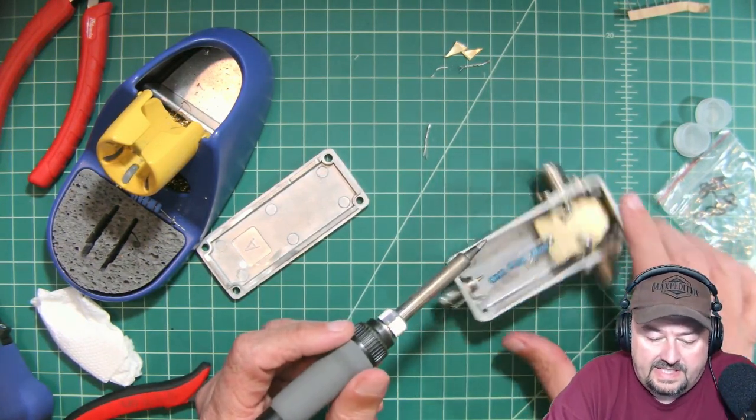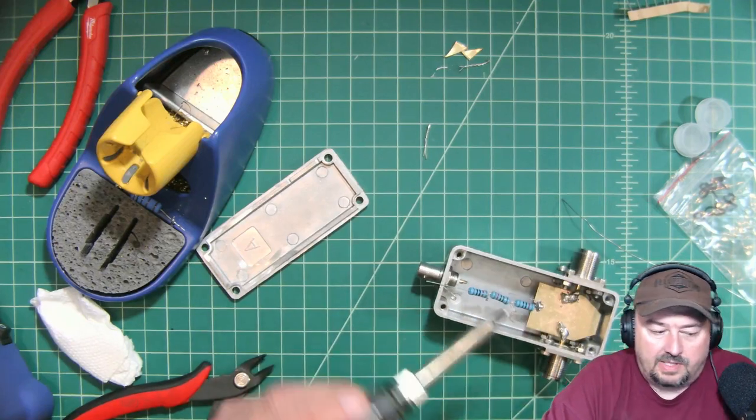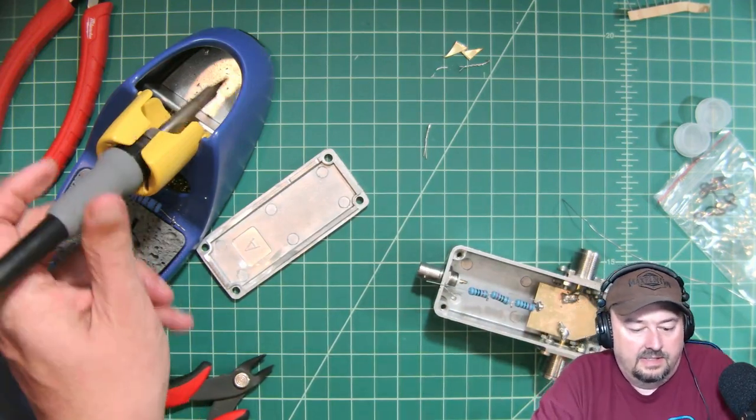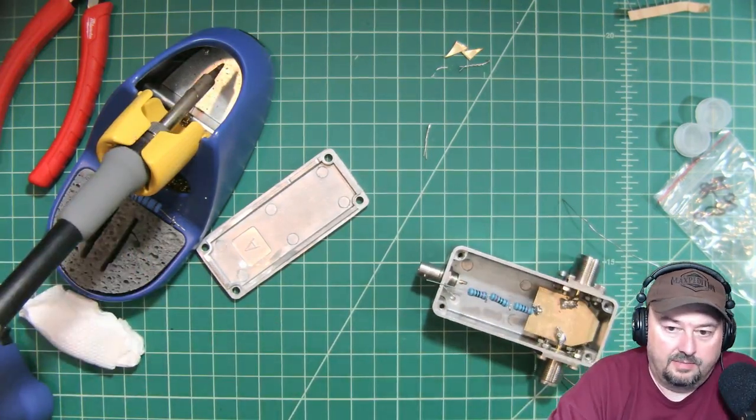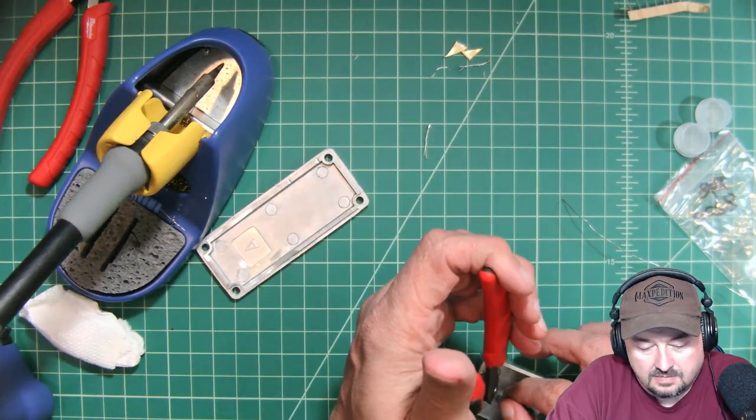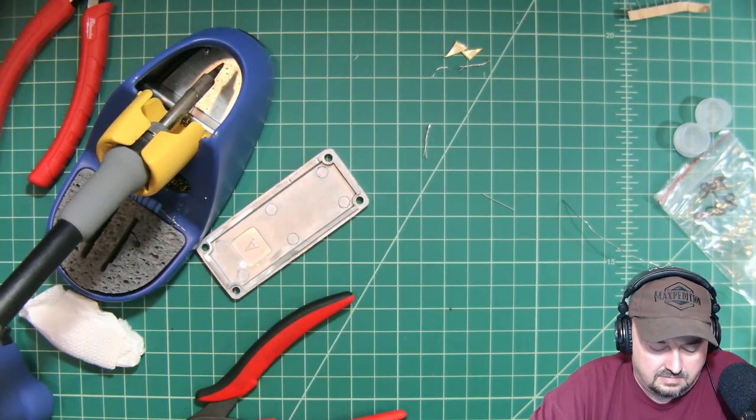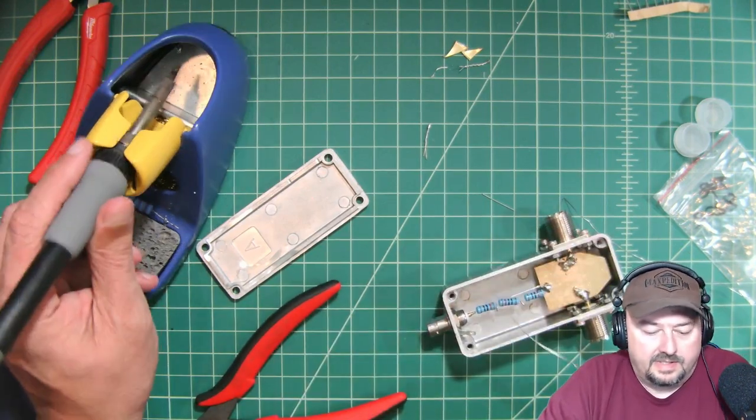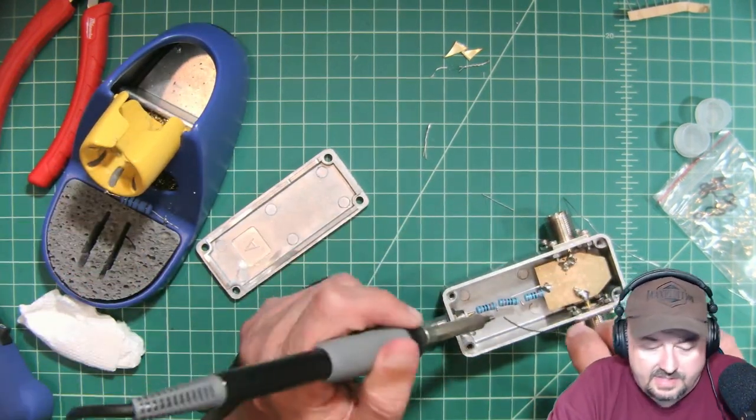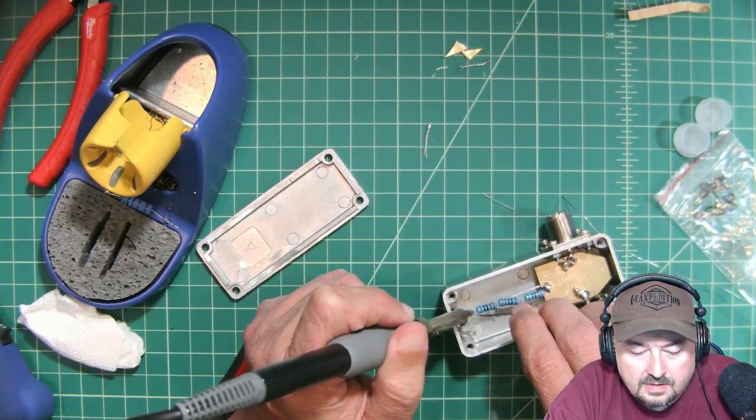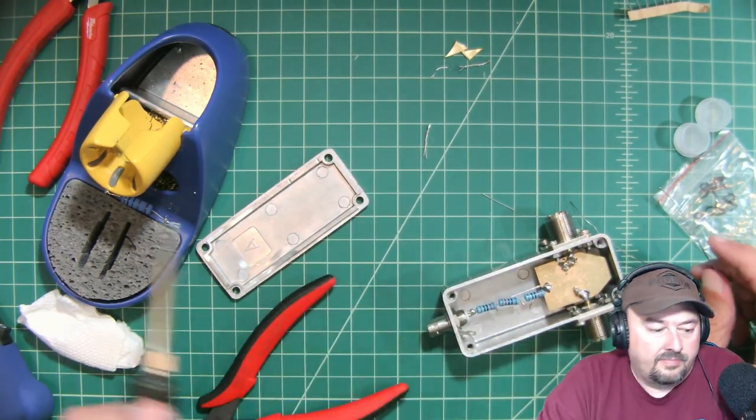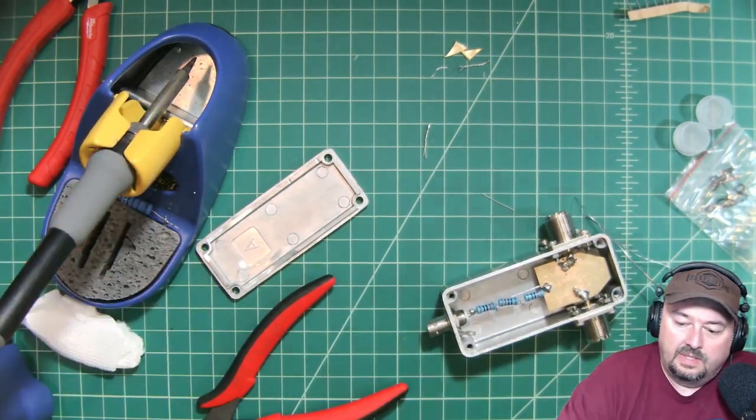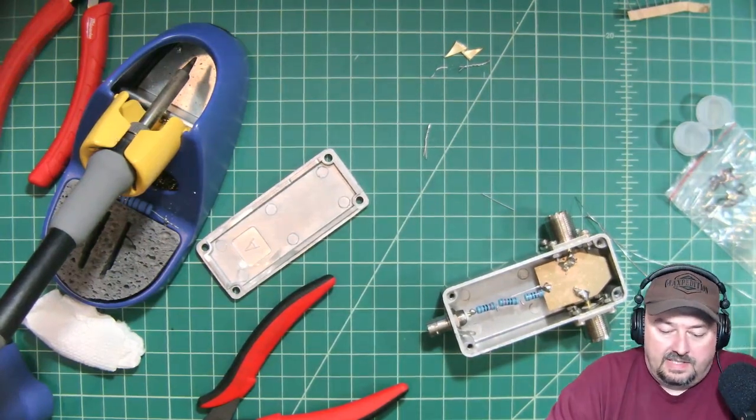All right, I believe that is done. Now we need to get this part connected. And that's going to take a little bit of finagling. All right, there it is. Now let's see if we can bridge this with some solder. And I think that's going to do it. Now let's get this piece out. The 50 ohm, in our case, 47 ohm resistor.